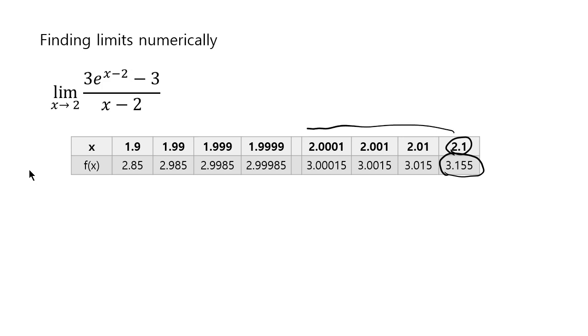And as you get closer and closer to 2, see 2.0001 is closer to 2, right? So as it gets closer and closer to 2, what's happening to this value of the function? 3.155, 3.015, 3.001, 3.0001. So that's getting closer and closer to 3, right?